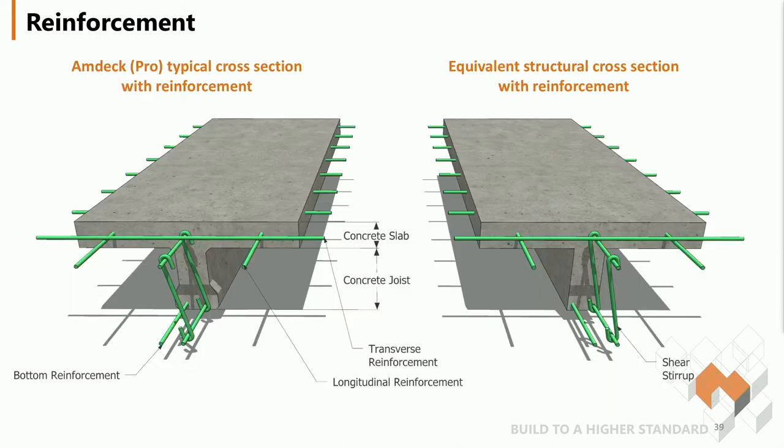The same goes for concrete joists. Although their cross-section is not a simple rectangle, when designing their reinforcement their more complex cross-section is simplified to a slab and a rectangular beam. This allows the designer to calculate shear strength, moment strength (positive or negative), short or long-term deflection, etc. The more complex joist cross-section only plays a role in determining the self-weight of the system and the rebar placement in terms of minimum concrete coverage.